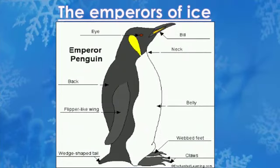My dear students, before starting the chapter, let us discuss an activity that is given at the beginning of the chapter. In this activity, the picture of an emperor penguin is given. An emperor penguin is the largest of the 17 types of penguins, and he can grow about half the height of an adult person.